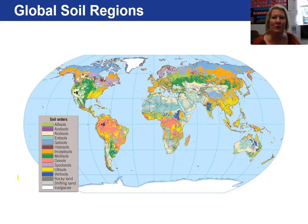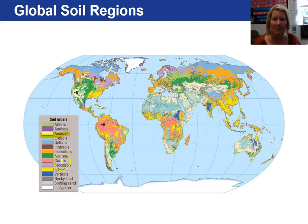Here is a picture showing globally the different soils and soil orders. For example, at point B the soil would be an aridisol, and at point A, in this pink area, it's an oxisol.